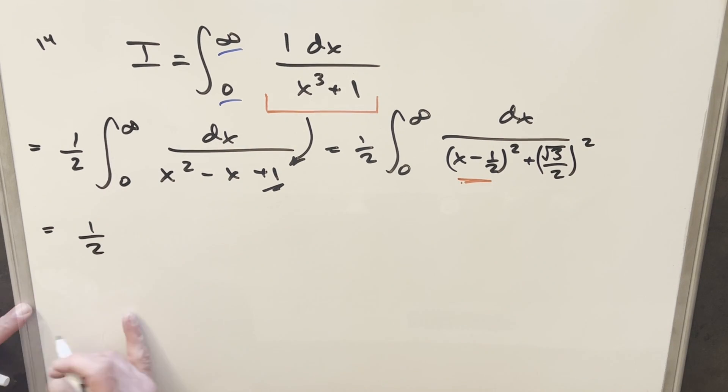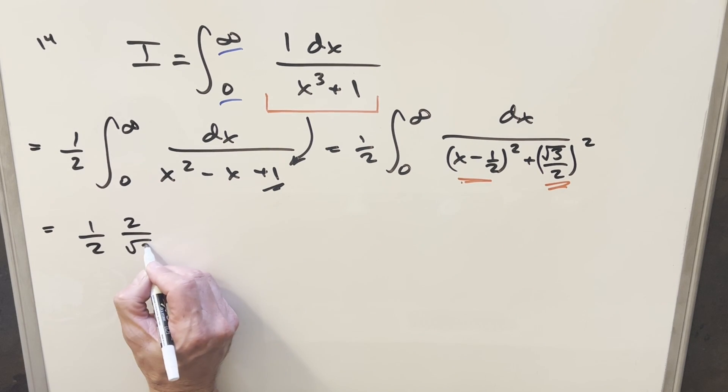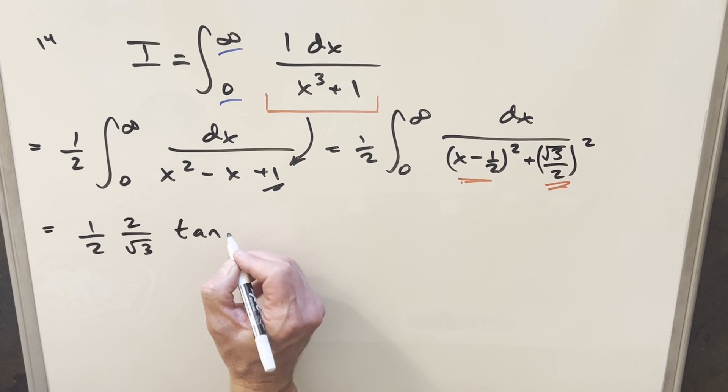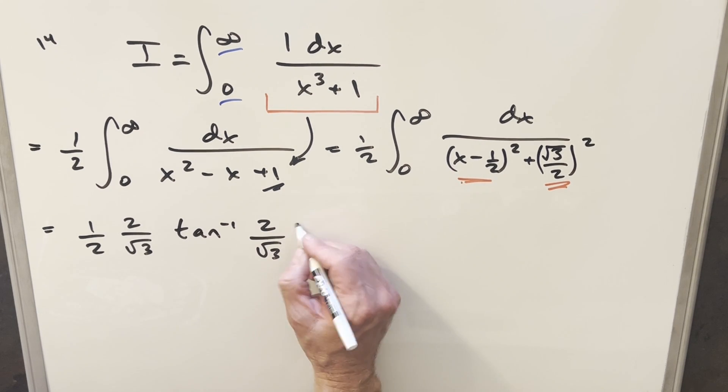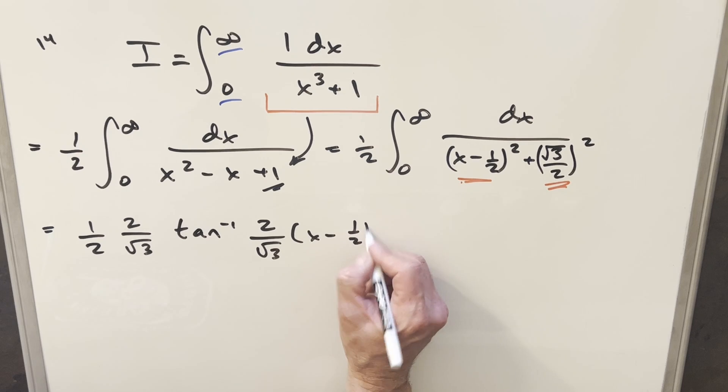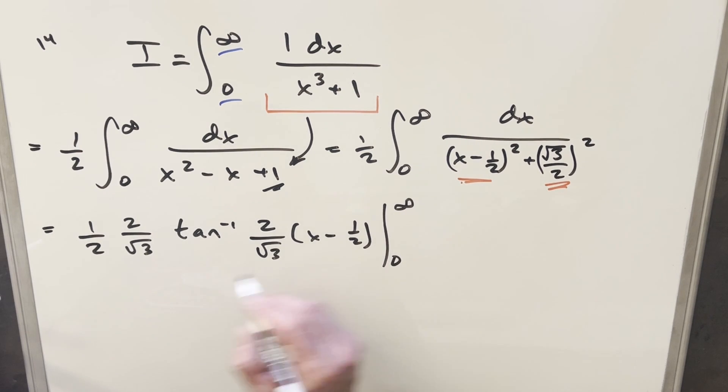What we'll have here is I'll have a half out front. Then we're going to need the reciprocal of this value here. So what that's going to become is we'll flip it and we'll get 2 over square root of 3. And this will become Arctan. Again, the same value 2 square root of 3 times our input x minus 1 half. And then what I'll do is I'm just going to clean this up a little bit. We can cancel 2's here.